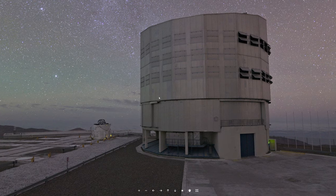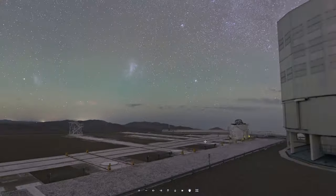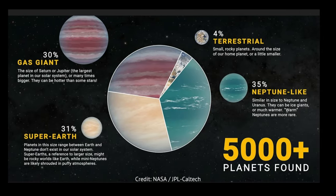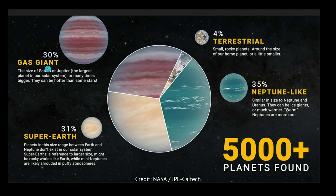Now let's have a look at the pictures this beautiful combination of optical telescopes can take. NASA's Jet Propulsion Laboratory and Caltech tell us we have over 5,000 exoplanets found in our galaxy, in our Milky Way. About 4% of them look like Earth and are terrestrial, 35% look like Neptune, 31% look like a super-Earth in size between Earth and Neptune, and about 30% are gas giants like Saturn or Jupiter.